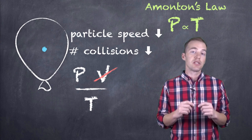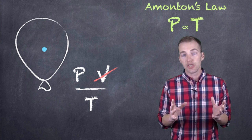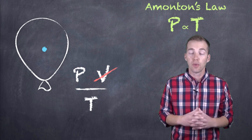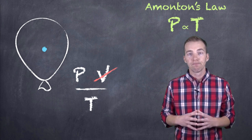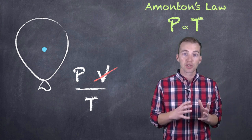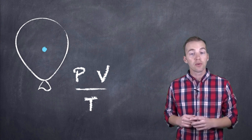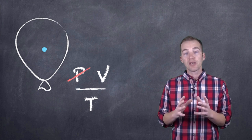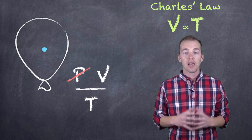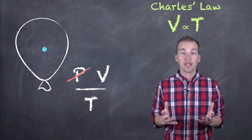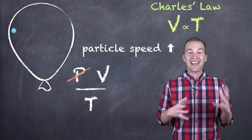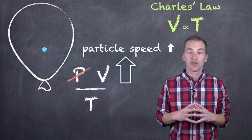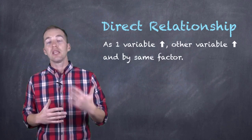We have a direct relationship between pressure and temperature. It's important to note that in all of these relationships, we're always holding everything else constant — the amount of gas stays constant, and the volume stays constant, so only pressure or temperature is changing. Amonton's Law states that pressure is proportional to temperature and those two variables are directly related. Now let's look at another relationship: volume and temperature. Holding pressure constant, we examine Charles' Law, which states that the volume of a gas is proportional to its temperature. As temperature increases, kinetic energy increases, and with constant pressure, the volume of the container starts to increase — a direct relationship.